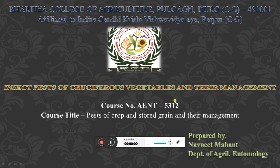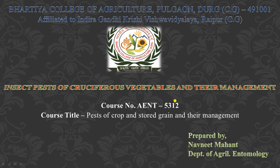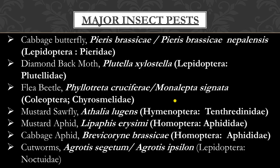Hello guys, this is Norit Mahan, Department of Agricultural Entomology. Today we are going to discuss about insect pests of cruciferous vegetables. Cruciferous vegetables means cabbage, cauliflower, mustard, etc.